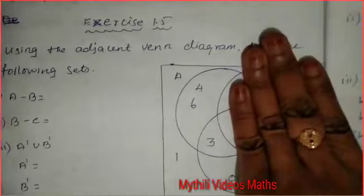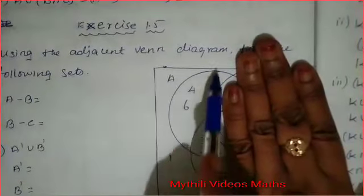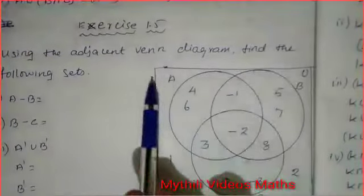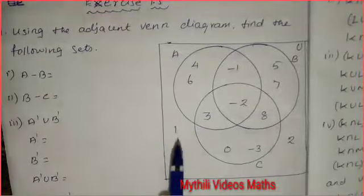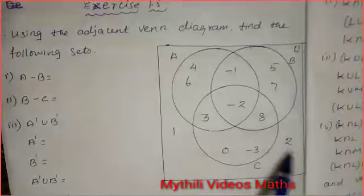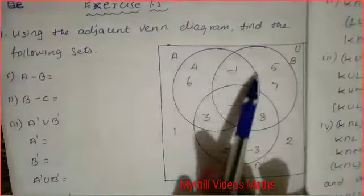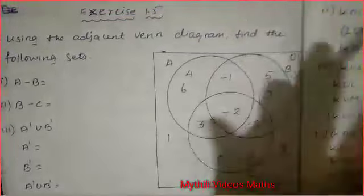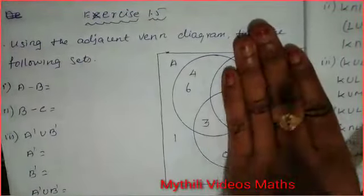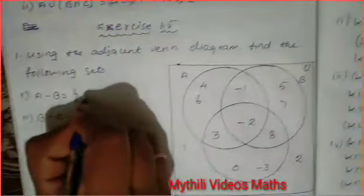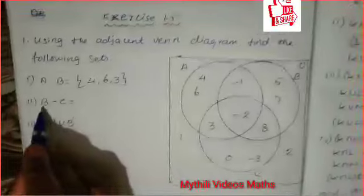We subtract the full B set from A. The universal set has outside numbers 1 and 2, but we only need A minus B — that is, from set A, subtract B fully. The remaining numbers are 4, 6, 3. So the answer for the first question is {4, 6, 3}.